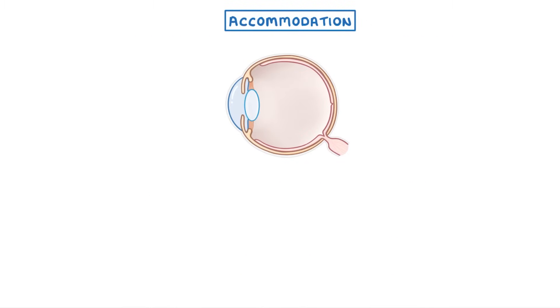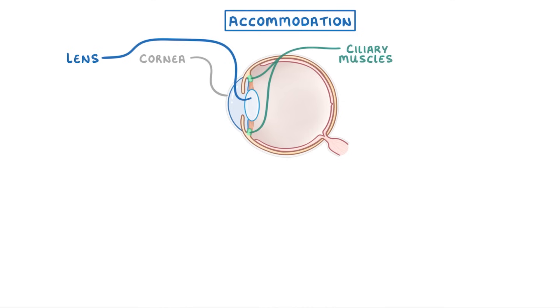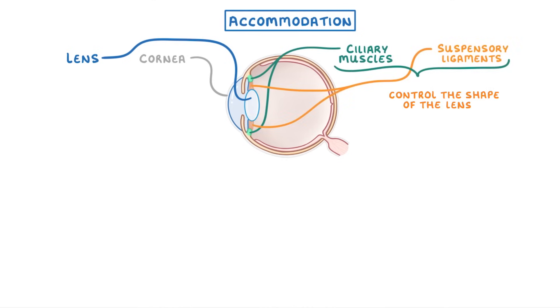If we look at this cross-sectional image of an eye, the important parts for this video are the cornea and the lens, which both refract or bend light, and then the ciliary muscles and suspensory ligaments, which control the shape of the lens.